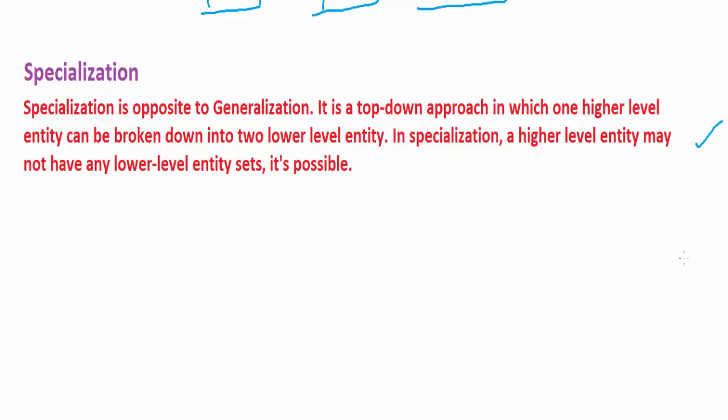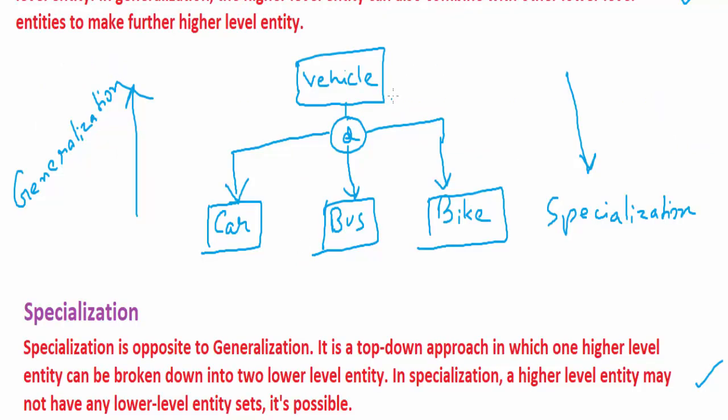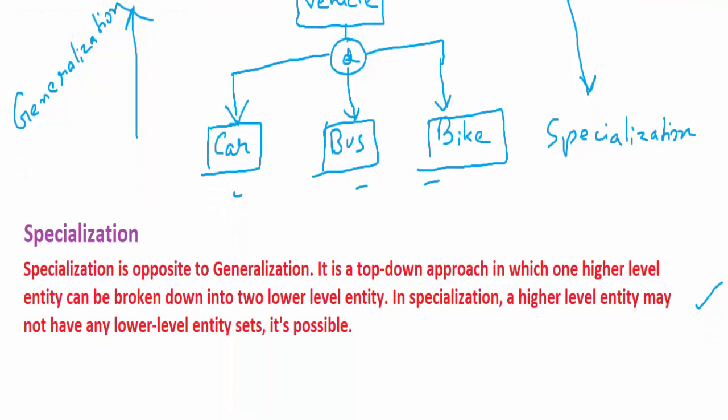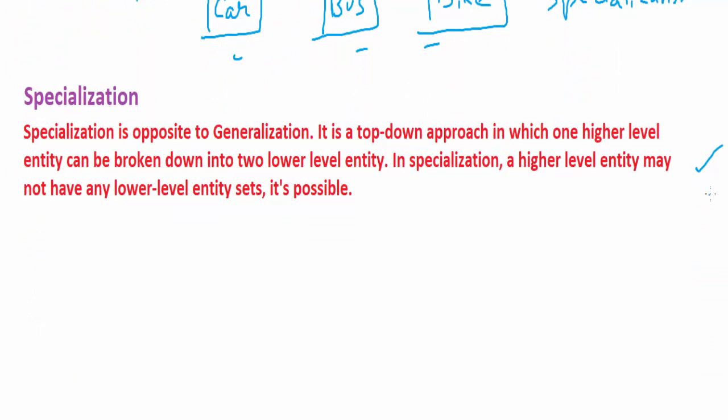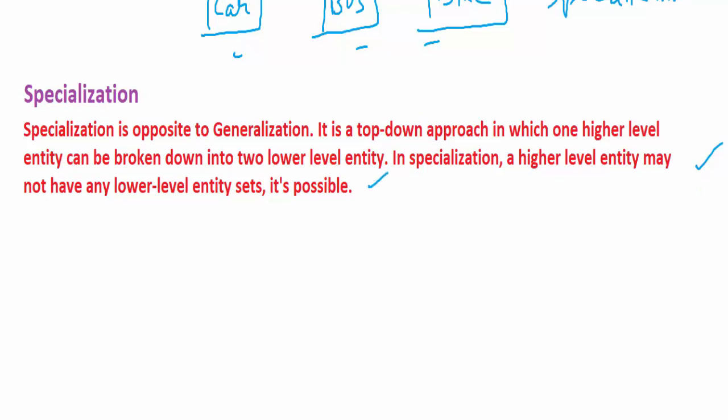Specialization is a process of identifying subsets of an entity, that is a super class, that shares some distinguishing characteristics. It is a process of taking the subsets of a higher level entity set to form a lower level entity set. It is a top-down approach of defining the super class and its related subclass. Whatever I said is written right here, you can just note it down.